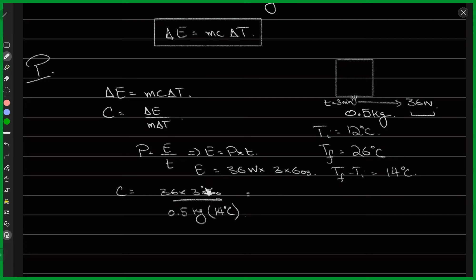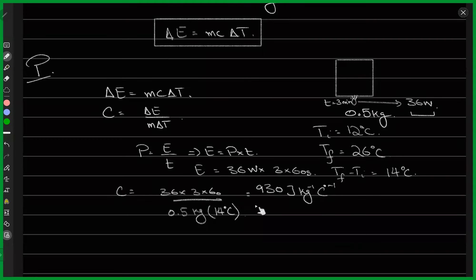That gives you 930 joules per kilogram per 14 degrees Celsius. Anyway, most of it was just doing the math, but is the idea of specific heat capacity clear for everyone? It's clear.